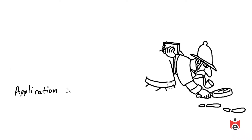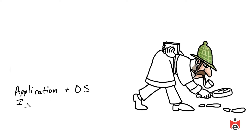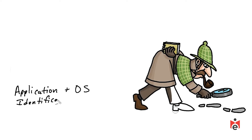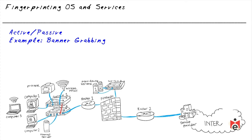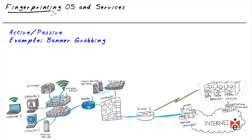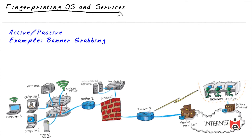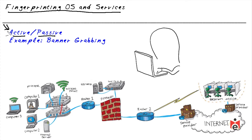Once we know a device exists and has various ports open, it would be great to discover the actual version of the OS or the version of software like a web service. There are tools to discover exactly that. When fingerprinting an OS and its services, there are two basic categories: active and passive. With active fingerprinting, the attacker directly sends traffic to the victim and observes how it responds.